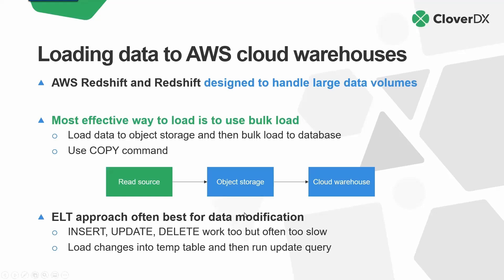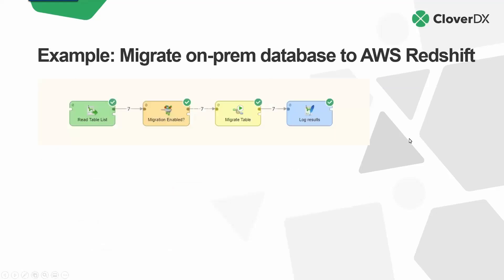Pipeline-wise, it might look like this. Here I'm going to move some data from an on-prem relational — I think this is Microsoft SQL — into Redshift. I've set this particular pipeline up with the idea that you might need to run it multiple times, iterate over it, and make sure everything is complete. So it's designed to be restartable and configurable so that you can do it piecemeal. It starts by reading a list of tables that are the subject for our migration, making sure each particular table is a target we actually want to migrate, and if we do, performing the migration and then keeping a log of everything that we've done.